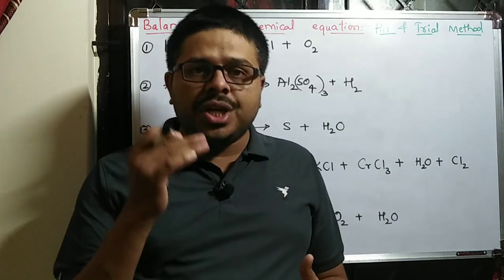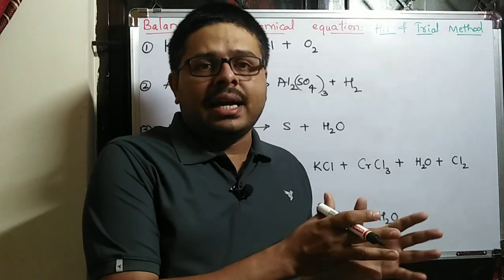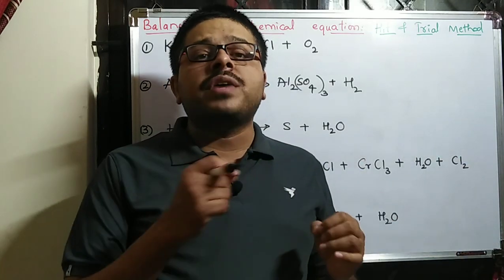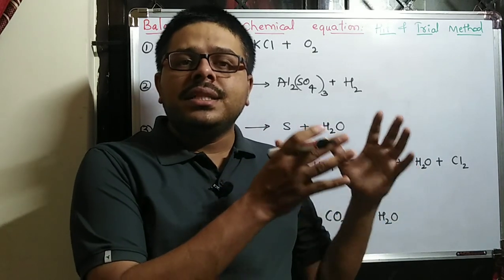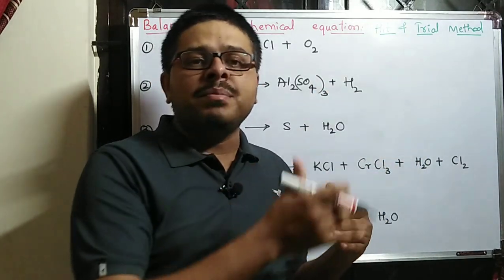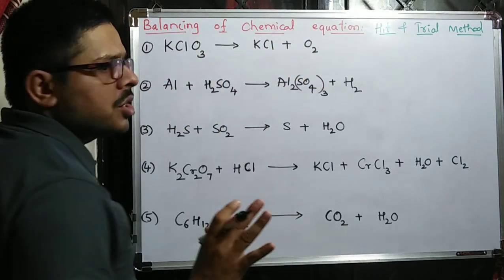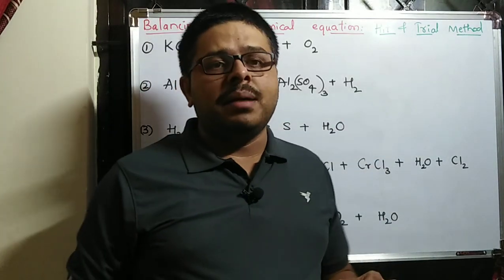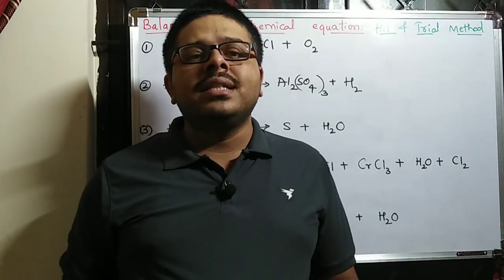Why is balancing of a reaction required? In the universe, the mass of the reactant which reacted should be equal to the mass of the product formed. This is a universal rule called the law of conservation of mass. Whatever atoms are on the LHS, when we make those atoms equal on both sides, the mass automatically becomes equal. Hence the masses on the reactant side should equal the product side — that is what we call a balanced chemical equation. In a board exam, if you don't write a balanced equation, you will not get complete marks.